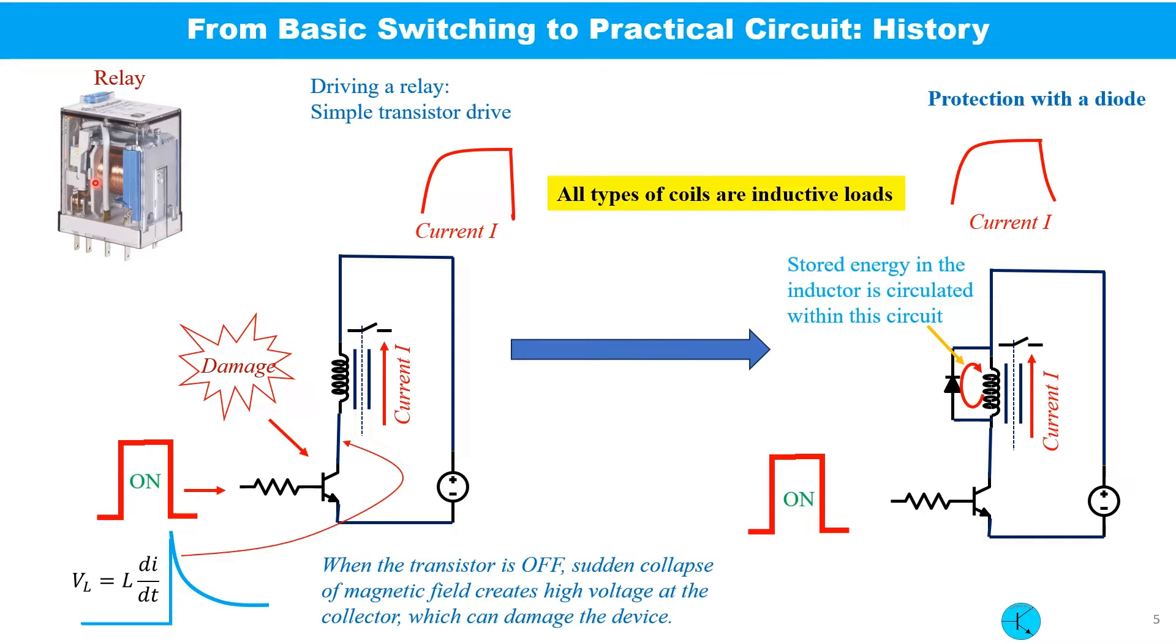You may have seen electromechanical relays like this one here and there. Though it is a very old part, existed over a century and still exists in many modern electronic systems. To drive this kind of relay, you will often find a very simple circuit like this one. When the voltage is applied at the base of the transistor, higher collector current energizes the relay coil and the relay is activated. And when this voltage is off, the relay is also off. Simple. Yes. No.